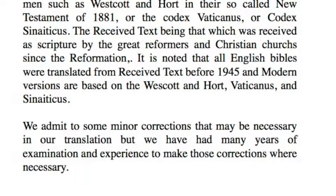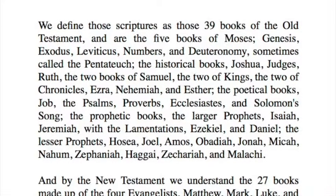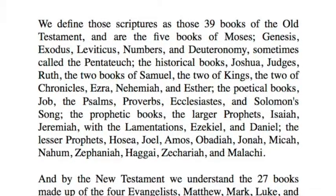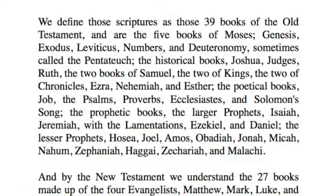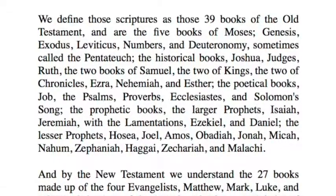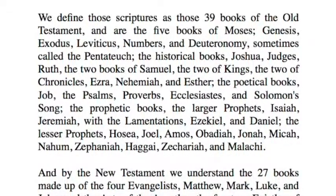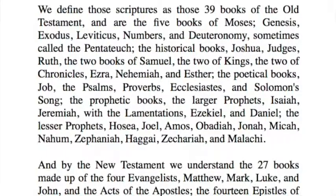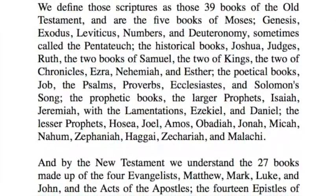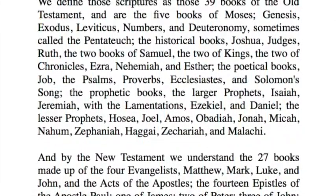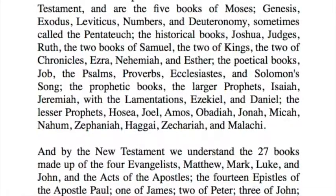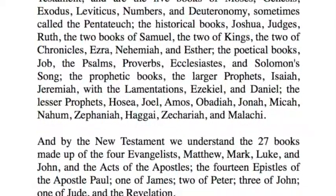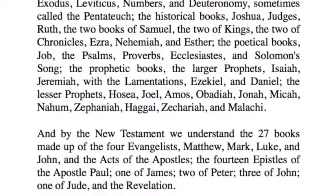We define these Scriptures as the 39 books of the Old Testament. They are the five books of Moses — Genesis, Exodus, Leviticus, Numbers, Deuteronomy — sometimes called the Pentateuch. The historical books: Joshua, Judges, Ruth, and the two books of Samuel, the two books of Kings, the two Chronicles, Ezra, Nehemiah, Esther. The poetic books: Job, Psalms, Proverbs, Ecclesiastes, and the Song of Solomon.